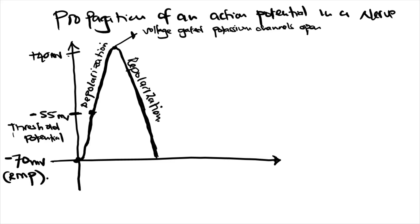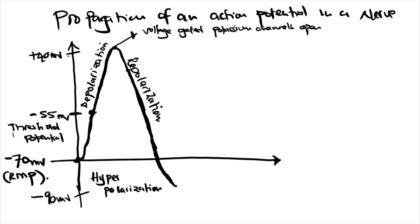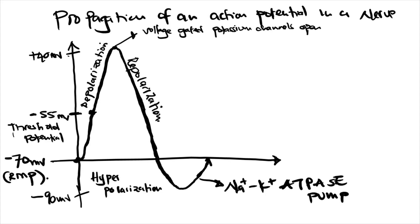The movement of potassium out causes the membrane potential to overshoot — going even below the resting membrane potential to about negative 90 millivolts. This period where the membrane potential goes more negative than the resting membrane potential is called hyperpolarization. This is corrected and the membrane potential returns to negative 70 via the sodium-potassium ATPase pump.